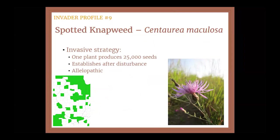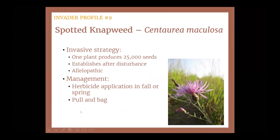Spotted knapweed is a big problem out west, and several northern counties in Illinois unfortunately have reported occurrences of this one. Each plant can produce an astounding number of seeds — over 25,000 seeds from a single plant in a single year. They prefer disturbed areas and they are allelopathic. Management includes using herbicide application in fall or spring on the rosettes, and if you have a small infestation you can pull and bag it. This one is also a biennial or short-lived perennial, so you do have that life stage where you should target your herbicide application if you're able to.